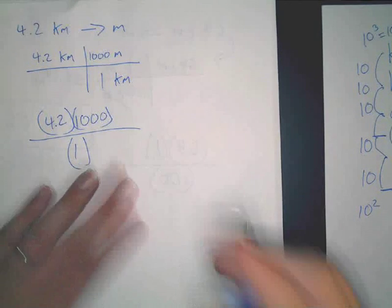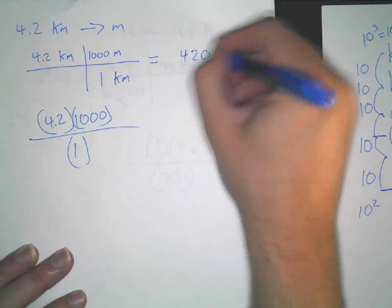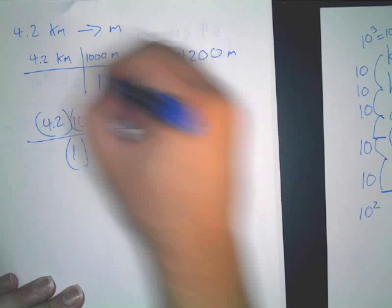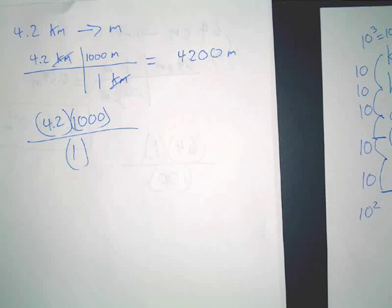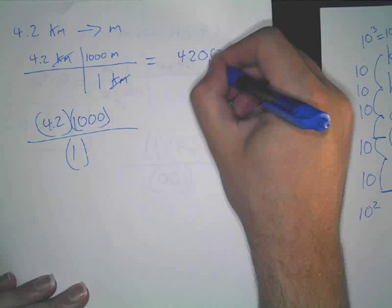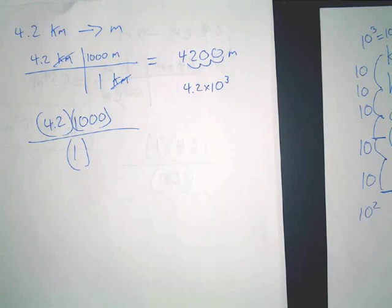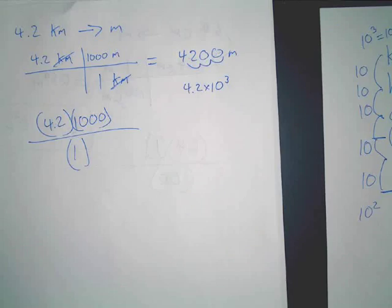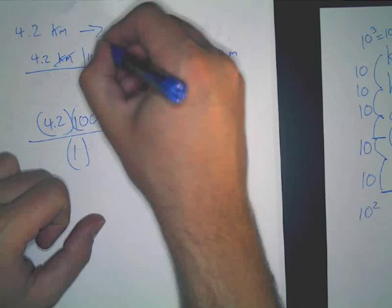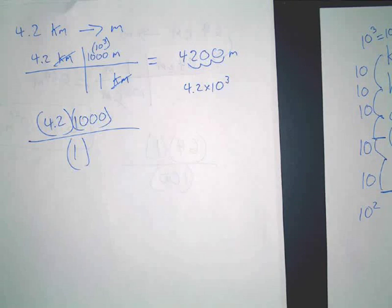So, we have this. You do the math. You end up with 4,200 meters. Cancel your kilometers out. And then, again, I would suggest you write it in scientific notation. 1, 2, 3. 4.2 times 10 to the third. And so, it would be really nice because if you had written this in scientific notation as 10 to the third, it's instant, it's already done for you, isn't it? The problem's already done. 4.2 times 10 to the third. So, that's nice. I think it's easier.